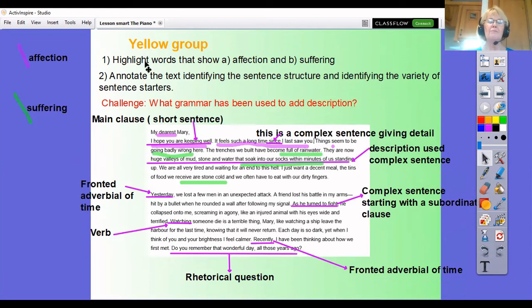Okay so Yellow Group, first thing I want you to do remember is highlight the words that show a) affection and b) suffering, give yourself a key and go through the text and do that. Then take each paragraph at a time and start to annotate the text, identifying the three different types of sentence structures you can have. Remember the simple, compound, complex. So here we've got a simple sentence, a short sentence, that's a clue, so it's going to possibly be a simple sentence. Has it got a verb and a noun in it, does it make sense on its own, then it's going to be a short sentence. Remember the clues I've given you when I've been talking you through this example.